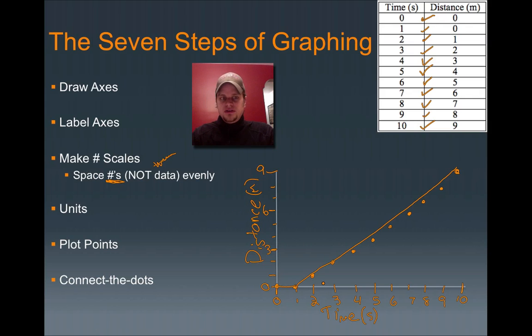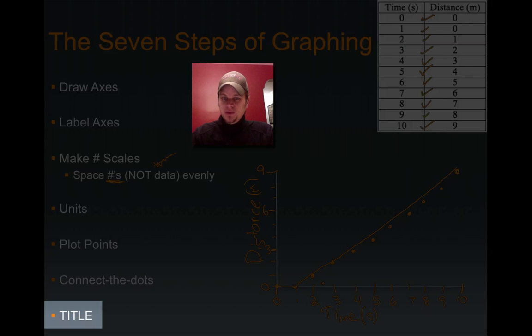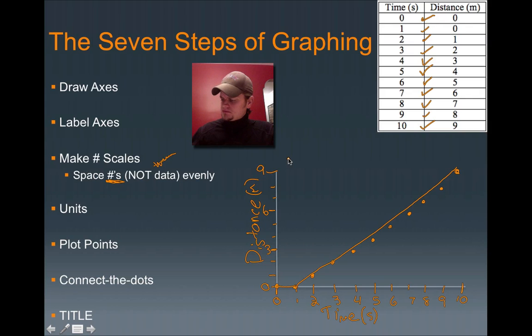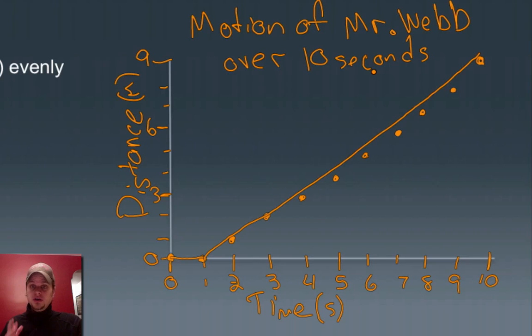But we're still missing one last thing here. This is step number seven, and it's super, super important. See, I know that this is a distance versus time graph, but we need a title. And so this might be the motion of, I don't know, let's say, I don't know what it is. I think I said it was a person. So we'll say that this is the motion of, I think it might have actually been me. So motion of Mr. Webb over 10 seconds. And there is my title.